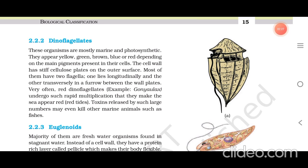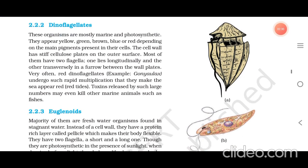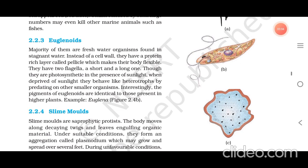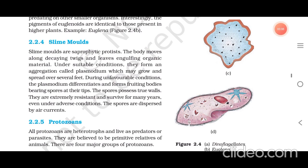Toxins released by such large numbers of dinoflagellates may even kill other marine animals such as fishes. Euglenoids: the majority of them are freshwater organisms found in stagnant water. Instead of a cell wall they have a protein-rich layer called pellicle, which makes their body flexible. They have two flagella — a short and a long one. Though they are photosynthetic in the presence of sunlight, when deprived of sunlight they behave like heterotrophs by predating on other smaller organisms. Interestingly, the pigments of euglenoids are identical to those present in higher plants. Example: Euglena.